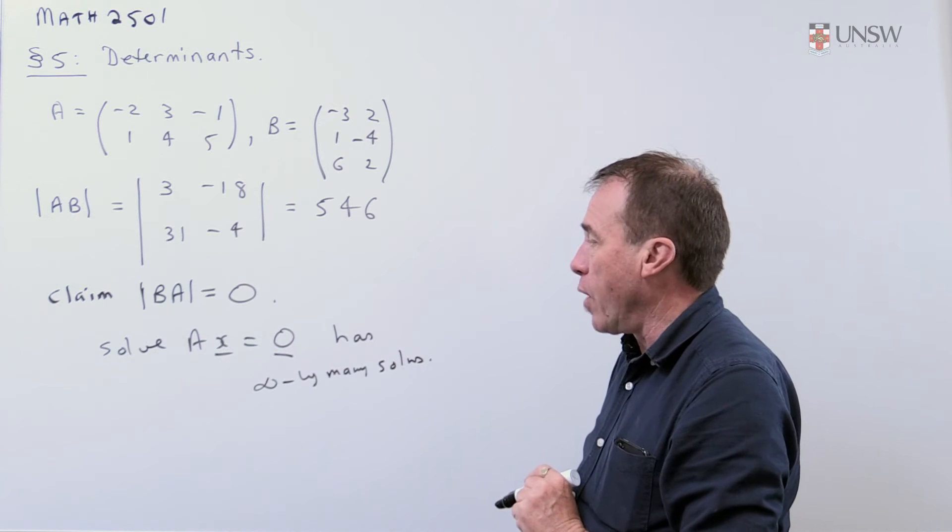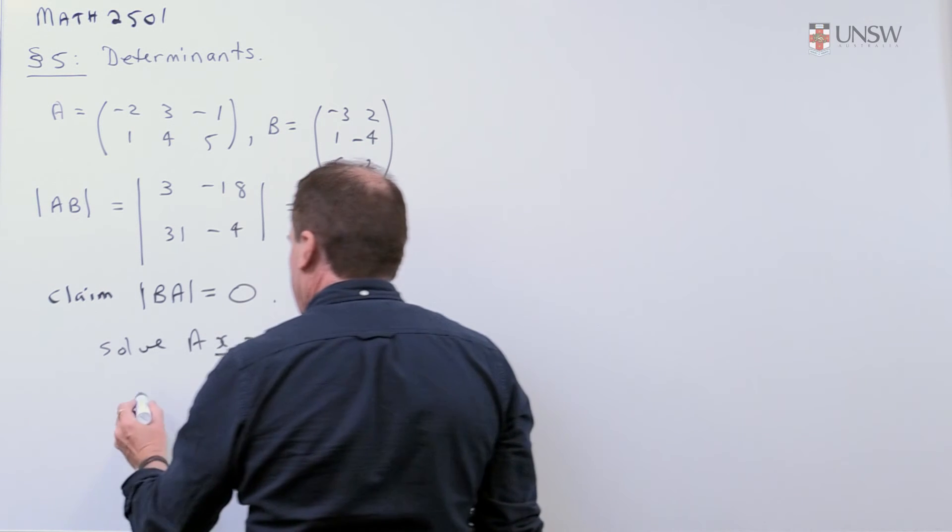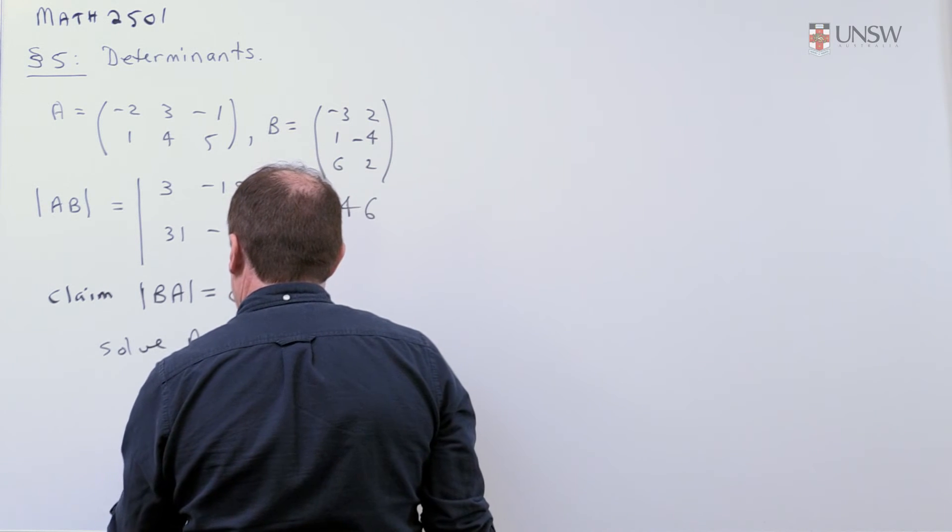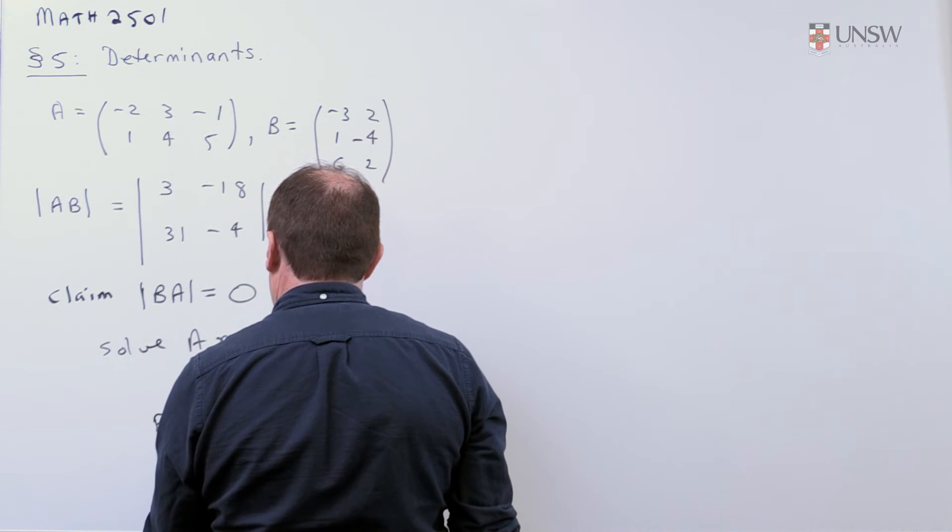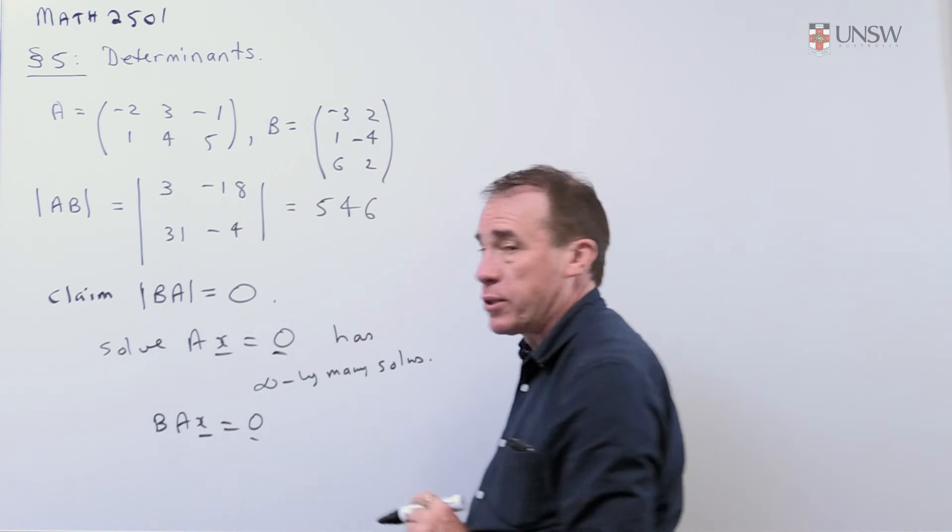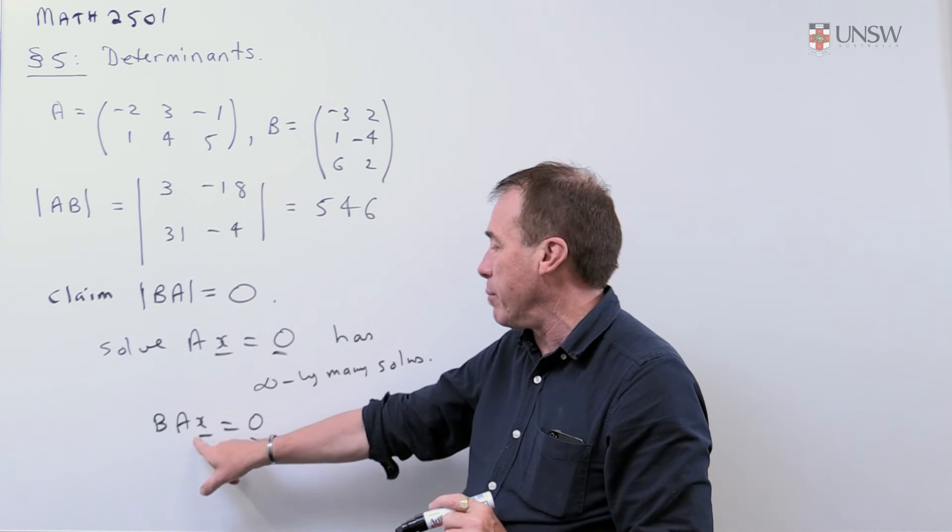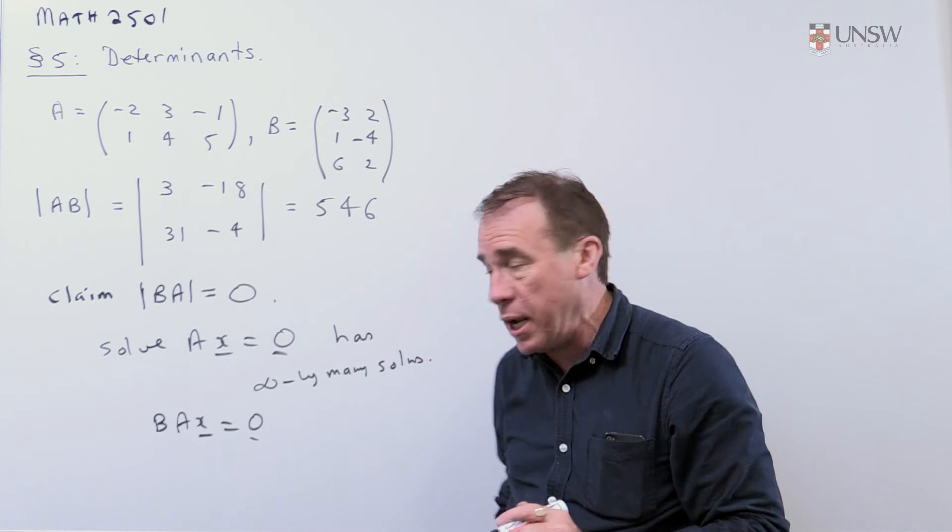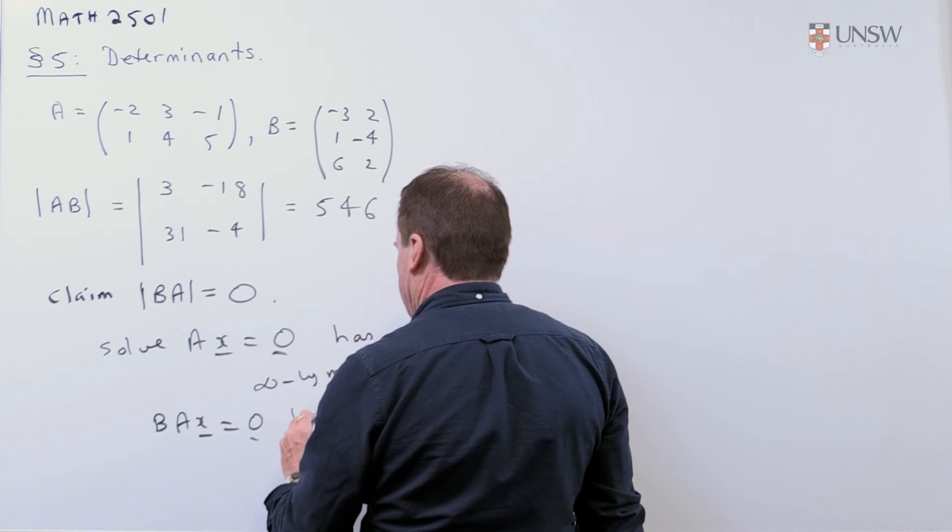Okay, well, if I multiply by B, well, BA times X is also equal zero. That also has infinitely many solutions, because any solution I've got up there is also going to be a solution here. So, this has infinitely many solutions.